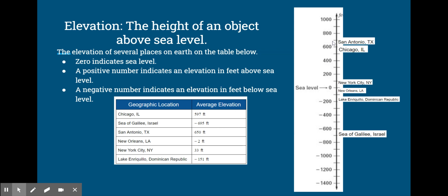Which location has the highest elevation? Did you say San Antonio, Texas? It has an elevation of 650 feet above sea level. We can see it here—it's the highest on our vertical number line. Which location has the lowest elevation? Did you say the Sea of Galilee in Israel? We can see in the table that it's got a negative symbol, so it is 695 feet below sea level.